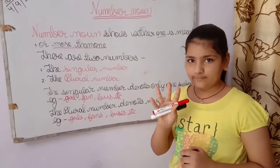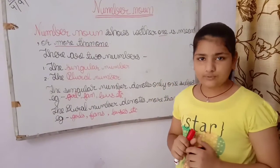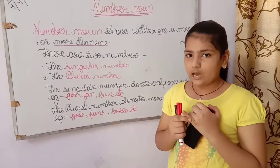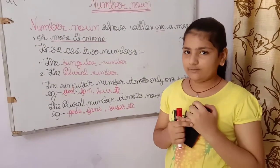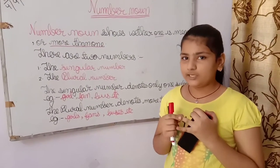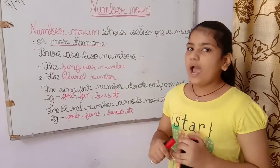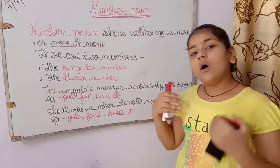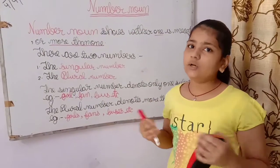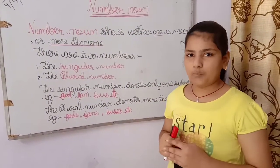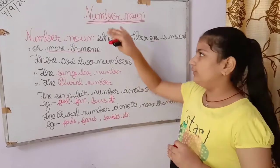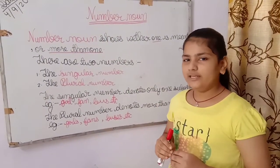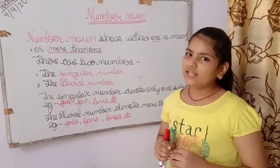There are 5 types of nouns. They are proper nouns, common nouns, collective nouns, abstract nouns, and material nouns. Number noun is also a part of noun. So today I am going to tell you about number noun. Let's begin.